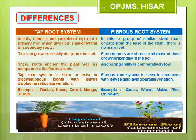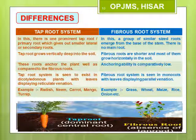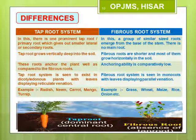Another difference is that tap root system is seen in dicotyledonous plants — plants whose seeds have two cotyledons, like rajma and beans. These plants usually have reticulate venation and tap root system. Whereas monocotyledonous plants like maize have fibrous root system and always display parallel venation.